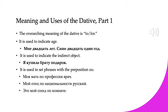We also use the dative case with the preposition по. По doesn't really translate well into English — it has lots of different meanings, but you know these set phrases. For example, по профессии means 'by profession.' So моя мать по профессии врач — my mother is a doctor by profession. Or по национальности, by nationality: мой отец по национальности русский — my father is ethnically Russian, or is a Russian by nationality.